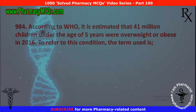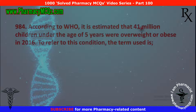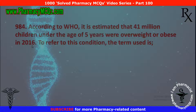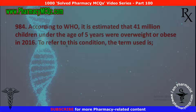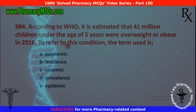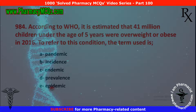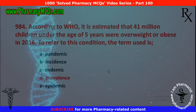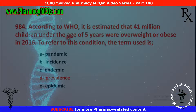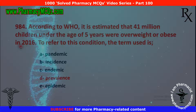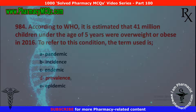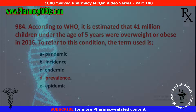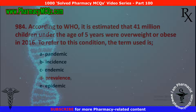Next MCQ: according to the World Health Organization, it is estimated that 41 million children under the age of 5 years were overweight or obese in 2016. The term used to refer to this condition is: pandemic, incidence, endemic, prevalence, or epidemic. The correct option is prevalence. This statistic shows the prevalence of a certain condition in a certain group of population at a certain age, which is what prevalence studies indicate.